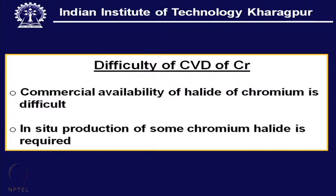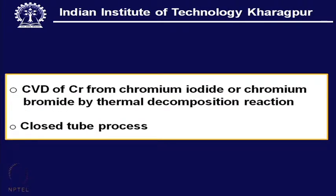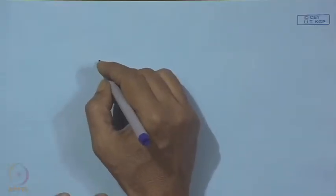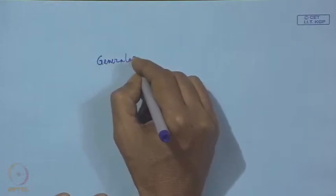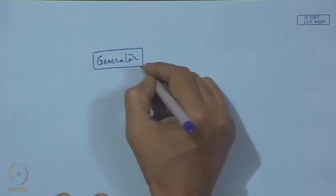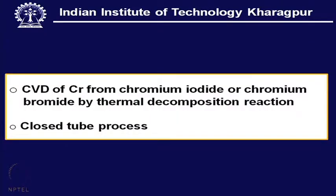What is preferred is the in situ production of some chromium halide — which can be an iodide, fluoride, bromide, or even chloride. The necessity of in situ production of this halide is an important step in CVD of chromium. Just upstream of the reactor, we must have one chromium halide generator — this generator will generate the vapor of chromium halide.